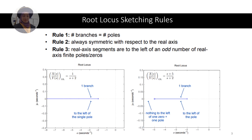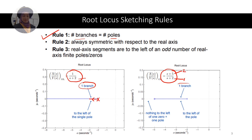Rule 1: the number of branches must equal the number of poles. We can determine the number of branches by looking at the number of poles. For example, in the first case there is only one pole in the system, so there will be only one branch, where the pole is at minus 2. Similarly, in the second example there is one pole and one zero, so one pole determines one branch.